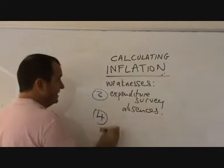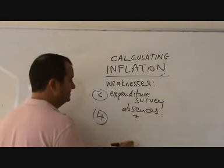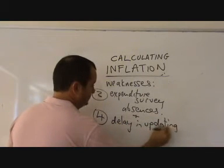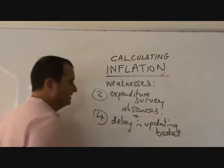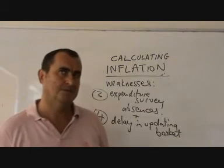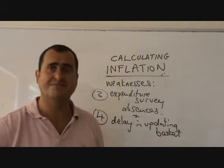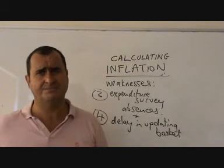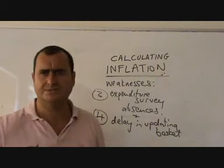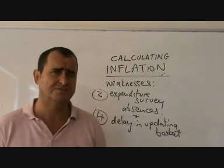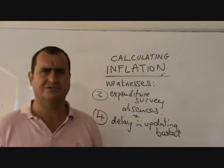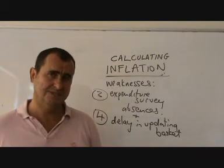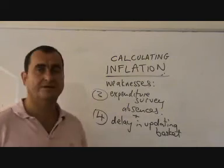The fourth weakness is the delay in updating the basket. Although the basket is updated once a year, once a year isn't really good enough — after 10 to 11 months we might be spending our money in a very different way but still using a basket that describes our spending pattern from 10 or 11 months earlier. New things come onto the market very quickly, especially technological products, and we stop spending on certain products quickly too — perhaps due to a health scare. This is not reflected until the basket is next updated, and consequently this leads to inaccuracy in the calculation of inflation.